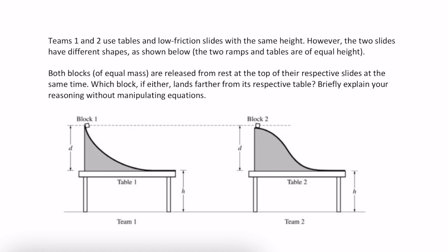So how do we solve this? Well, first we need to think about energy. If we consider the table as our reference level, both block one and block two start with some amount of gravitational potential energy. This potential energy is equivalent because both blocks are the same mass and both have the same delta H, which would be D. Since we know that energy is conserved, at the bottom of the ramp all the gravitational potential energy will be converted into kinetic energy. Loss is negligible because these are low friction slides.